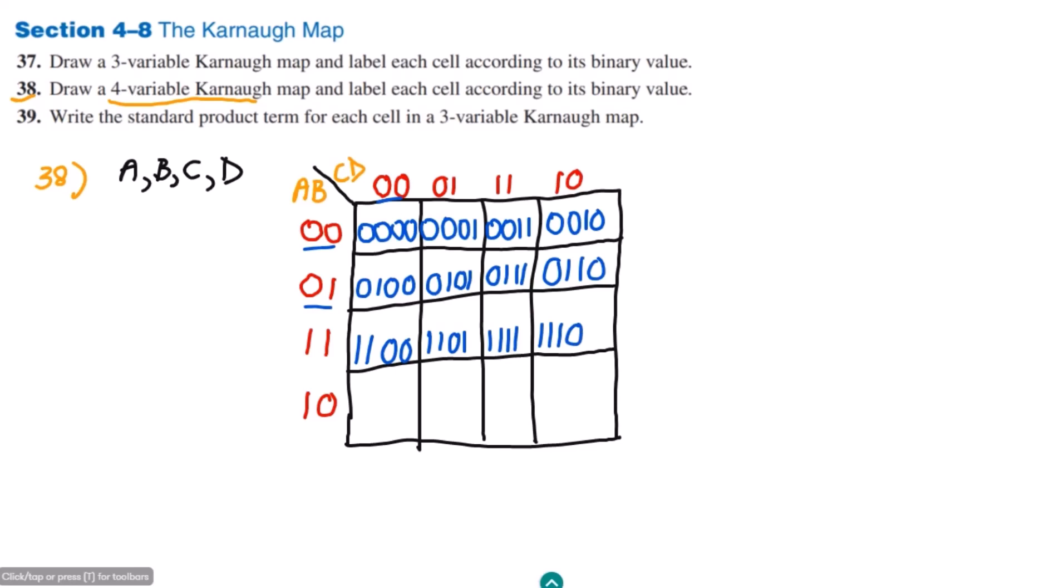Similarly here, now the row is 1, 0, and the column is 0, 0. This is 1, 0, this is 0, 1. Then 1, 0, 1, 1. And 1, 0, 1, 0.